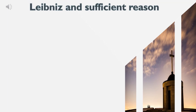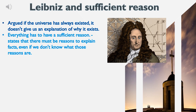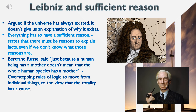Leibniz's Principle of Sufficient Reason: if the universe has always existed, it still doesn't give us an explanation of why it exists. Everything has to have a sufficient reason, and states that there must be reasons to explain facts, even if we don't know what those reasons are. Bertrand Russell said that just because a human being has a mother doesn't mean the whole human species has a mother — it is overstepping the rules of logic to move from individual things to the view that the totality has a cause.